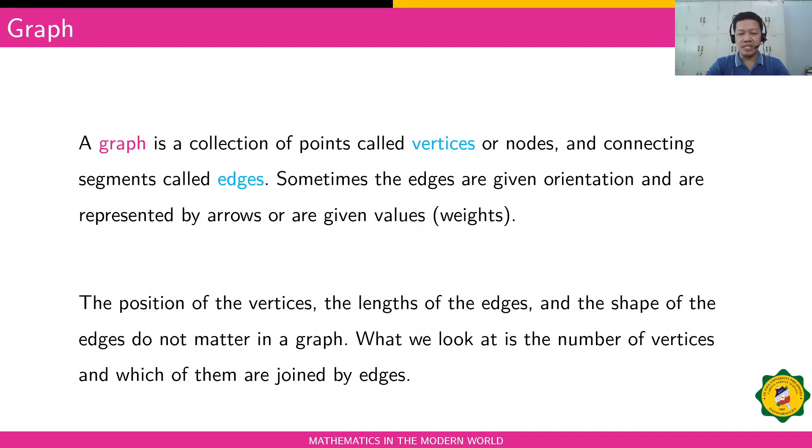Sometimes the edges are given orientation and are represented by arrows, or are given values called weights. The position of the vertices, the length of the edges, and the shape of the edges do not matter in a graph. What we look at is the number of vertices and which of them are joined together by edges.